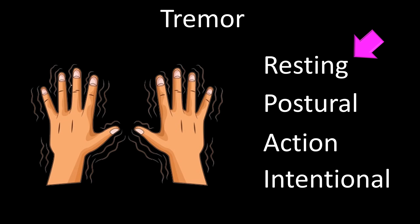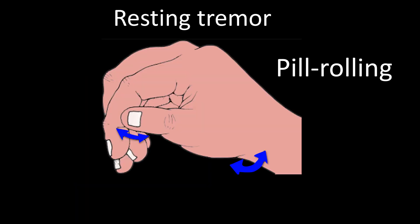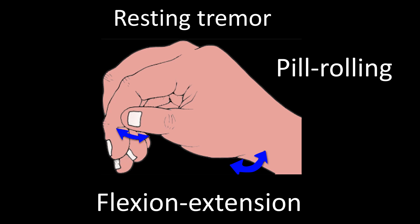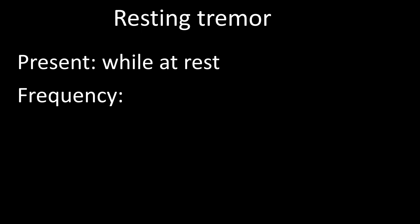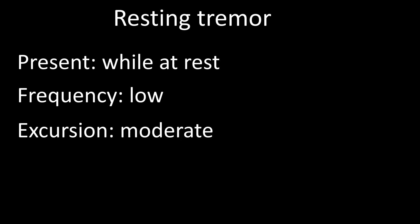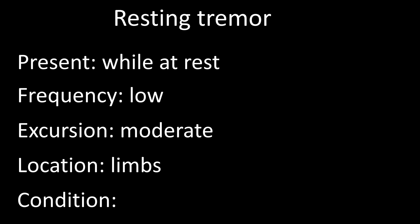Resting tremor is often referred to as pill-rolling tremor because it resembles a person rolling pills between the index and the thumb. It most often consists of flexion-extension movements at the wrist and fingers. Resting tremor occurs mainly at rest; frequency of oscillations is low, about 4 per second, and the degree of excursion is moderate. It is most often encountered in patients with Parkinson's disease.